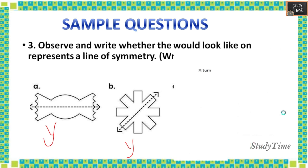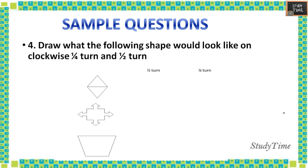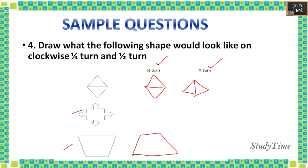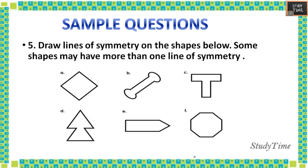Next, draw what the following shape would look like on a clockwise 1/4 turn and a half turn. For the 1/4 turn, this shape will look like this, and for the half turn the same object will look like this. Similarly for another shape, when it is a half turn it would look like this, and when it is a 1/4 turn it would look like this.